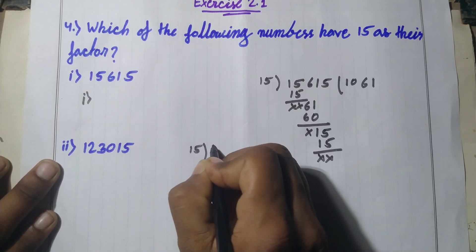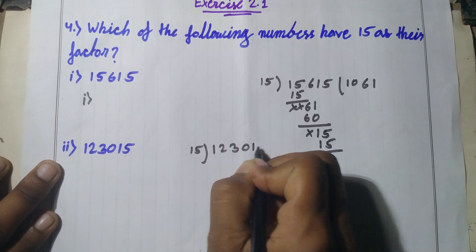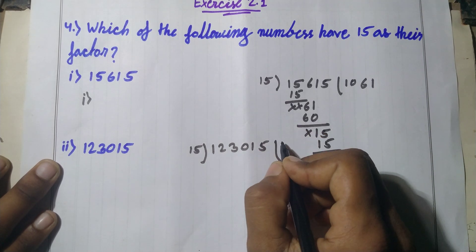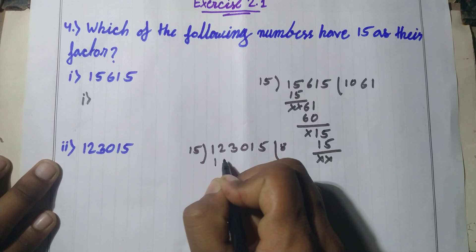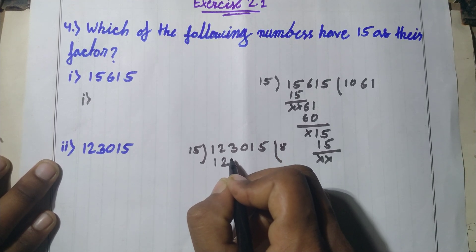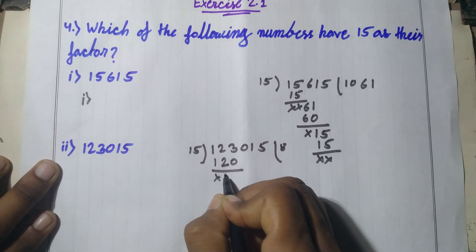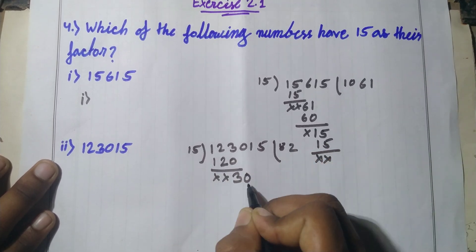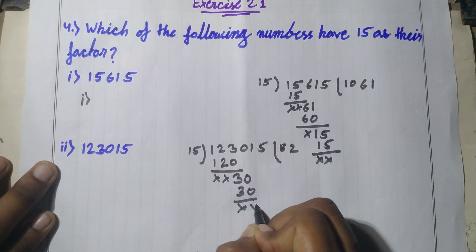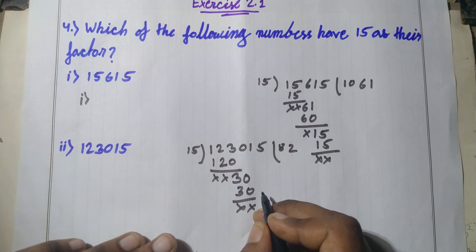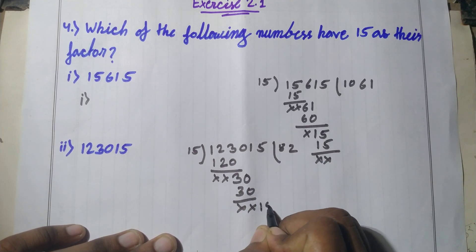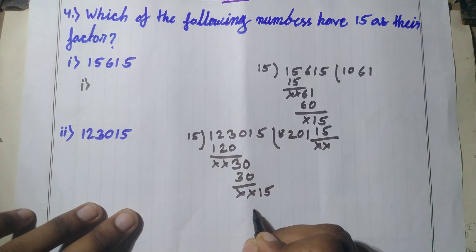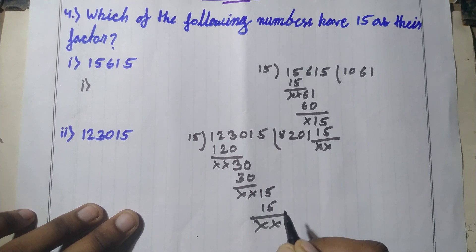We divide 1,23,015 by 15. 15 times 2 equals 30, with remainder 0. We bring down the next digits — 1 and 0 come in their place. One time 15, and the remainder is nothing.